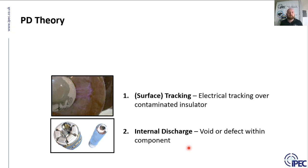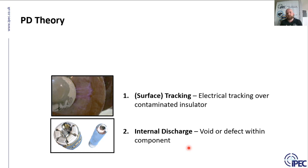With both of those defect types, they can occur across different parts of the network — anywhere within a switchgear — because obviously you've got high voltage running throughout, and you've got insulation throughout the switchgear. Any component of that insulation could be damaged, which could cause a partial discharge to emerge.